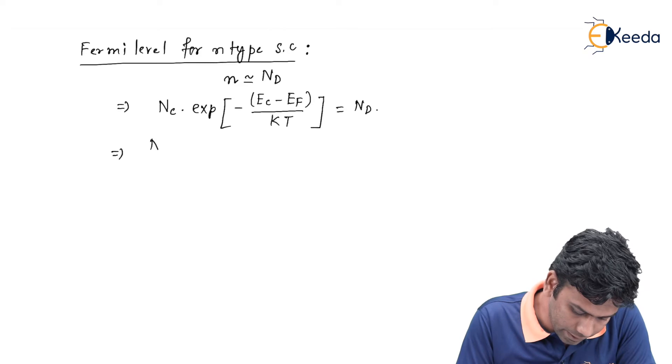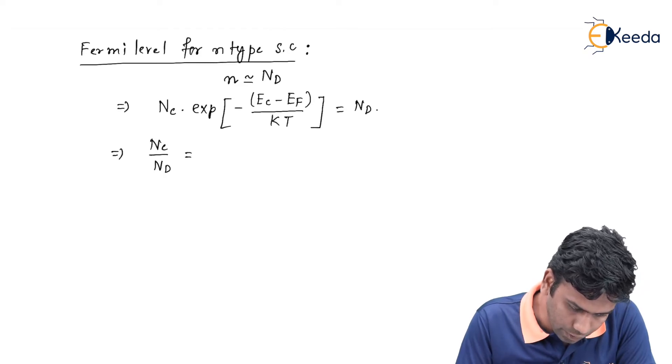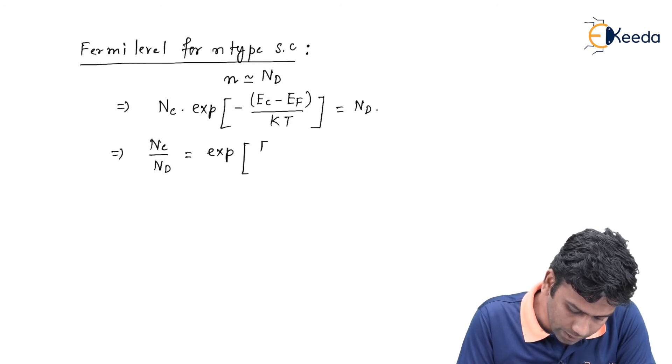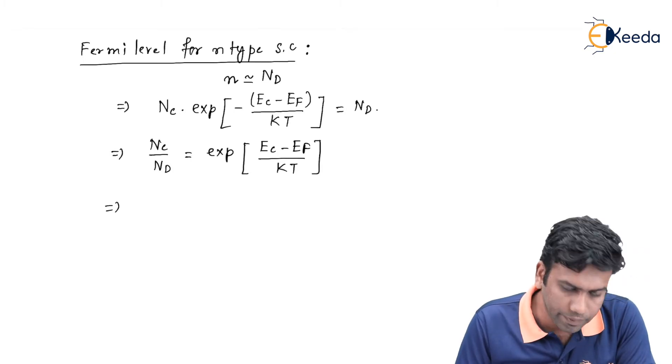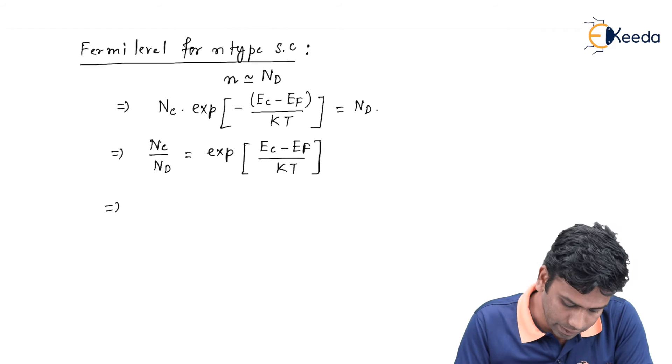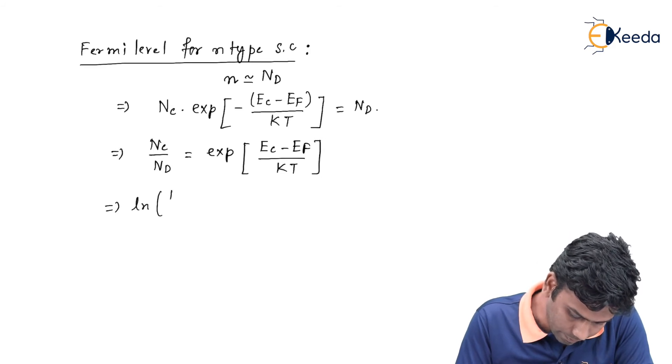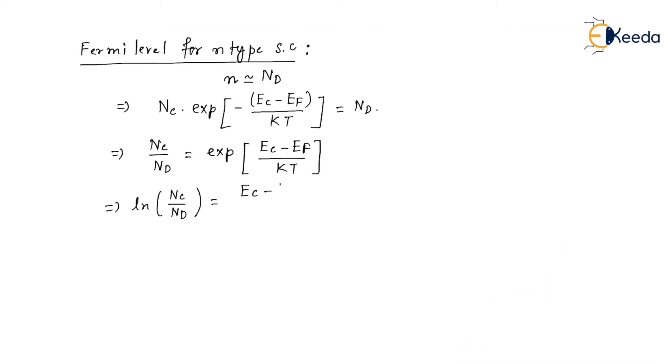If I find Nc by Nd, it will be exponential Ec minus Ef by kT. Now let us take ln on both sides, so ln Nc by Nd is equals to Ec minus Ef by kT.